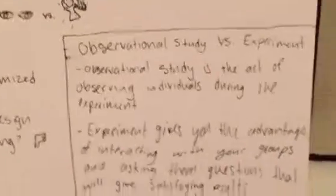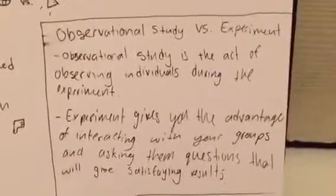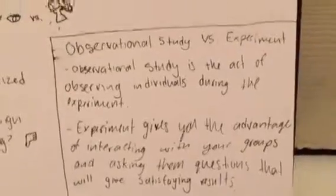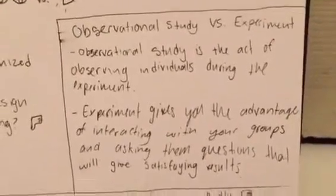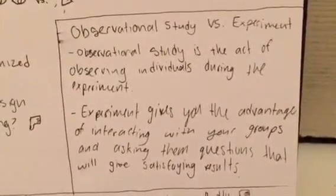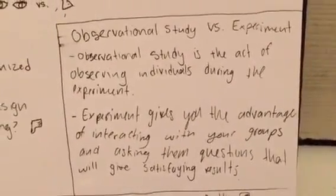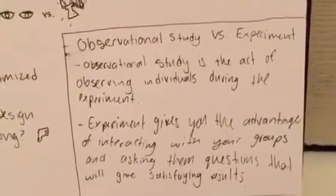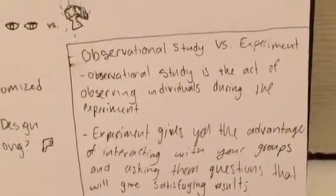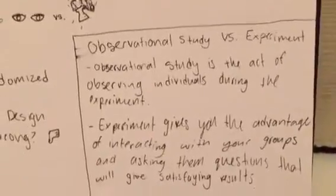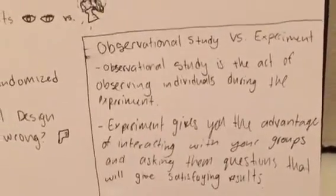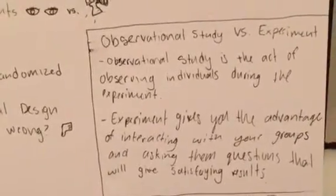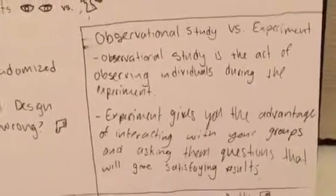First, we have observational study versus experiment. An observational study is the act of observing individuals during the experiment. Basically, you're conducting an experiment, you divide them into groups — treatment and control — and you just observe them. No interaction at all.